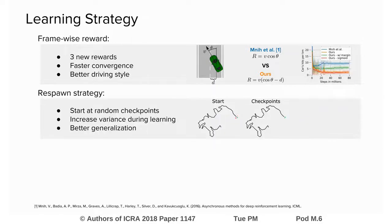To increase the variance in training data and fully benefit from the decorrelation property of A3C, the cars are initialized at random checkpoints on the tracks, which improves convergence and generalization capability.